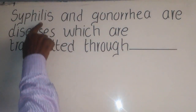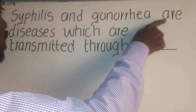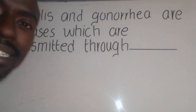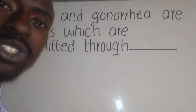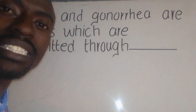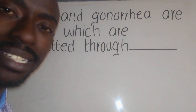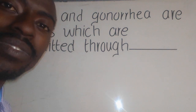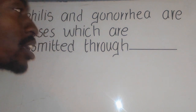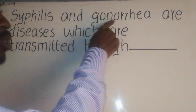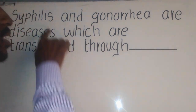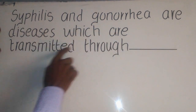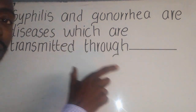The next question says: syphilis and gonorrhea are diseases which are transmitted through blank. We need to understand that here we are talking about sexually transmitted infections or diseases — diseases which are spread during sex. Syphilis and gonorrhea are examples of sexually transmitted diseases.